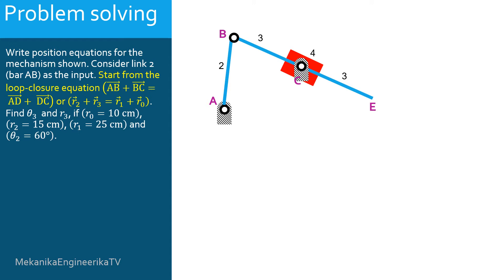The bar B is here translating relatively to the slider C. The mobility of the mechanism is 1, thus 1 input is required. Here, link 2 is considered as the input, and the angle theta 2 is considered given.